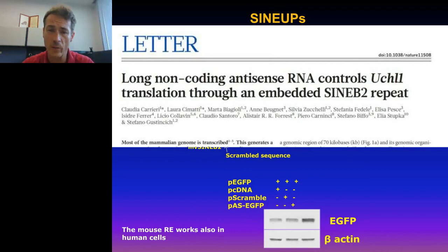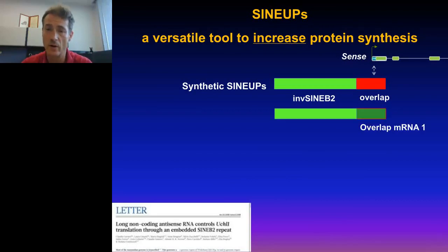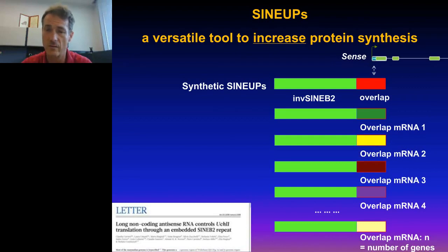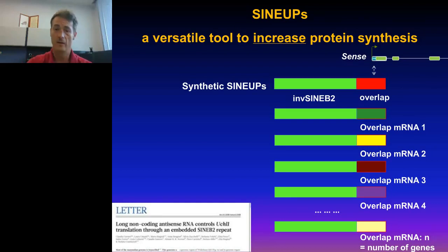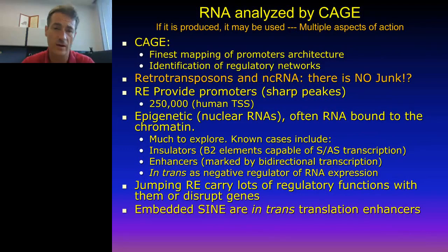We published this work in Nature at the end of last year. We can transfer this property by just changing the overlap to almost any gene in mammals. We can overlap with virtually any target RNA and essentially create a universal adapter to enhance protein translation. We call these RNAs SINEUPs — SINE-element Upregulated translation. They can work as a tool that is the contrary of microRNA or siRNA, and we think this can be important for production of proteins and enzymes and so on.